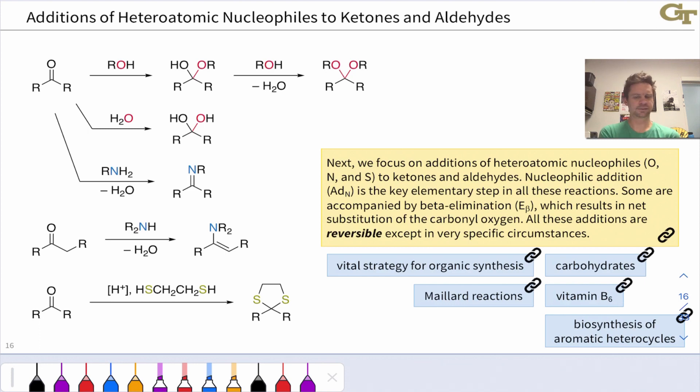Sulfur reacts analogously to oxygen, and so for example, thiols or dithiols as the case may be, react with ketones and aldehydes to give thioacetals, which are structurally analogous to the acetals that we see in the case of an alcohol.